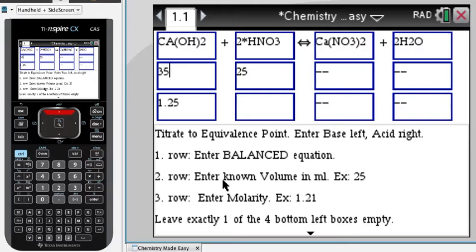OK, so we have instructions here. The volume in milliliters, enter the volumes here in the second row and the molarity in the third row. So if we leave the molarity here box blank, that means we're going to solve for it. And it says that here, leave one of the four bottom left boxes blank empty.